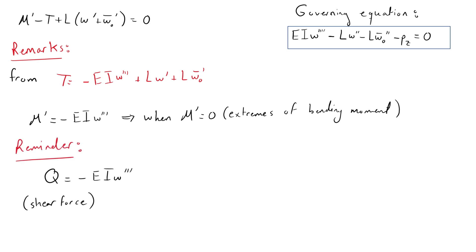And as a reminder from beam theory, the shear forces in a beam can be found as follows. We can immediately see that the shear forces in a beam column are influenced by the longitudinal forces as well. We can also see that just like a beam, in a beam column the extremes of the bending moment coincide with the zeros of the shear because they have the same term.